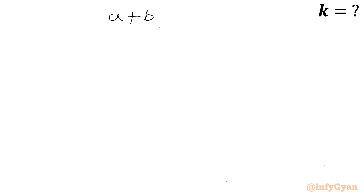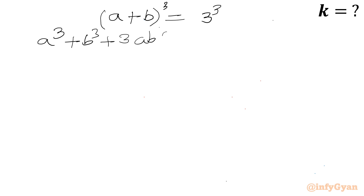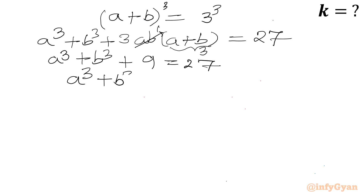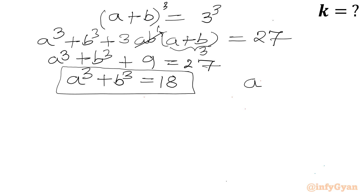Now let us consider cubing of the first equation a plus b equal to 3. Cubing both sides gives a cube plus b cube plus 3ab times (a plus b) equal to 27. Substituting ab equal to 1 and a plus b equal to 3, this gives a cube plus b cube plus 9 equal to 27. So a cube plus b cube equals 27 minus 9, which is 18.